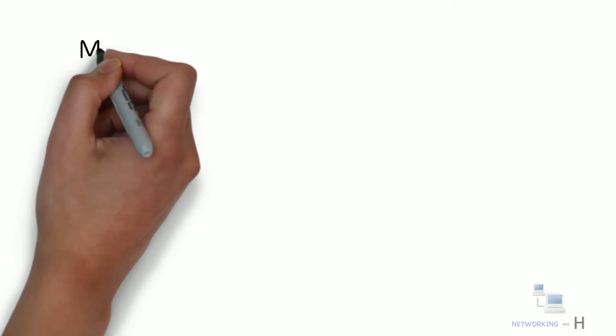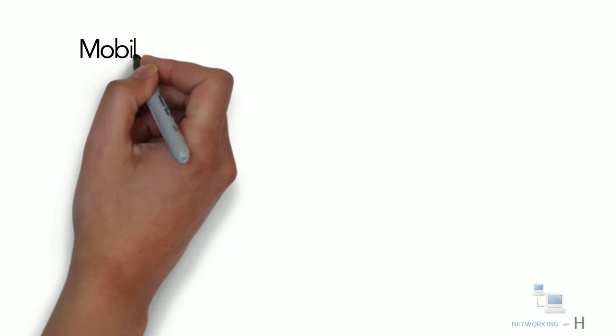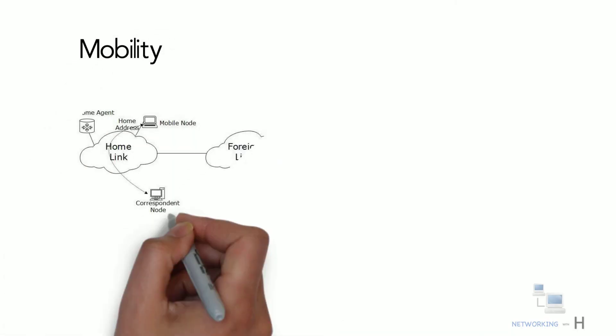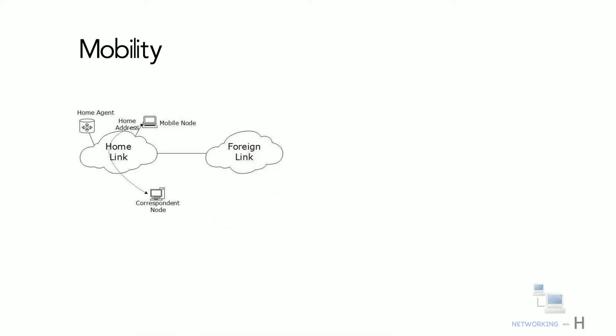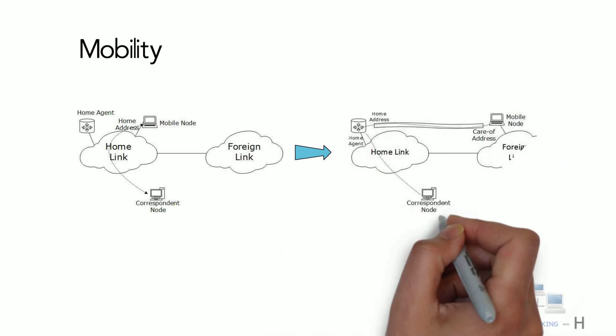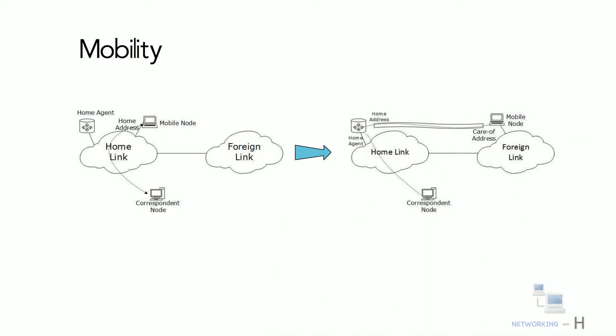Another feature is mobility. IPv6 was designed with mobility in mind. This feature enables hosts such as mobile phones to roam across different geographical areas and remain connected with the same IP address. The mobility feature of IPv6 takes advantage of auto IP configuration and extension headers.